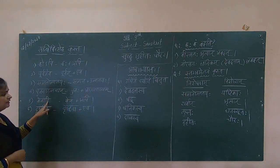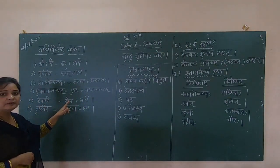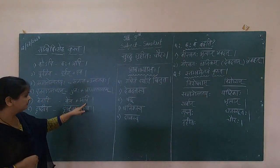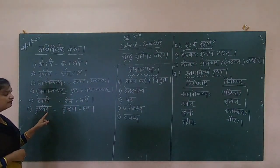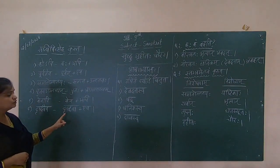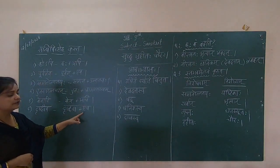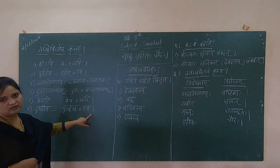Punaha plus agantavyam. Kena api — kena plus api. Drushtva eva — drushtva plus eva.